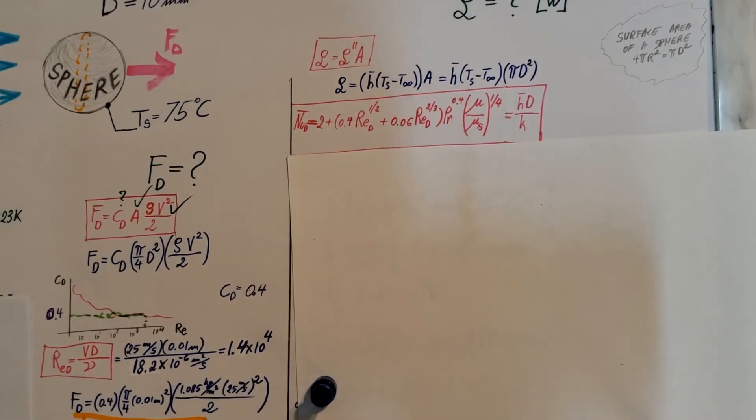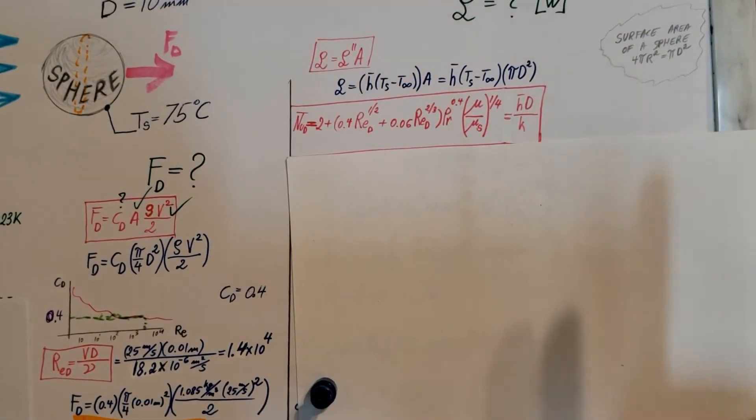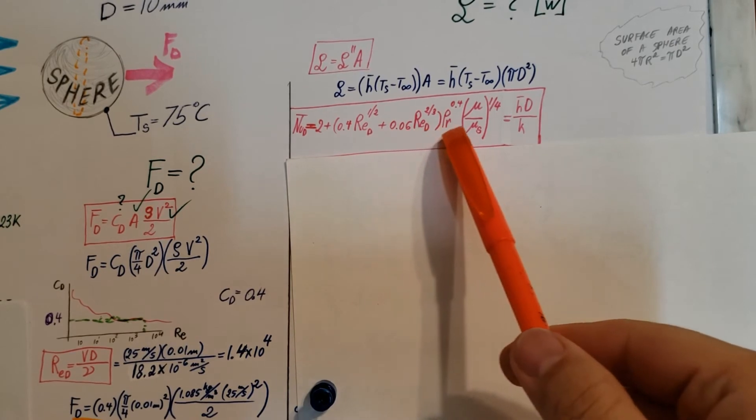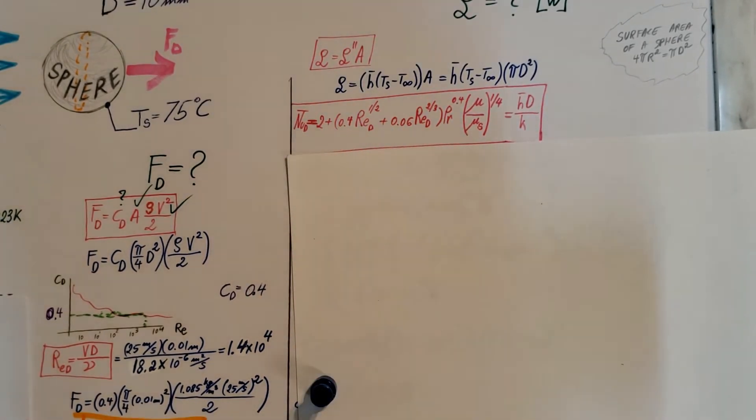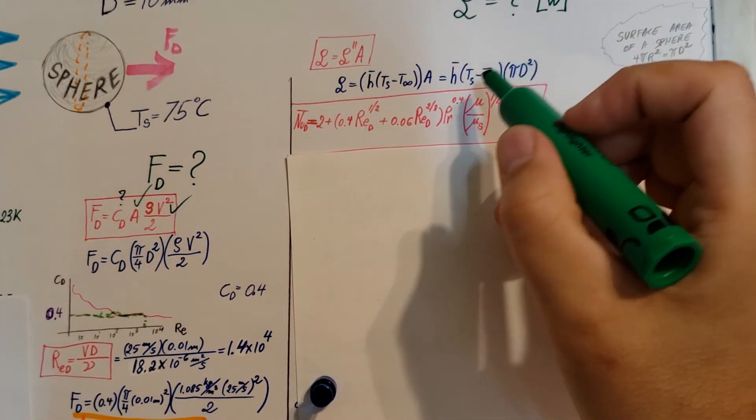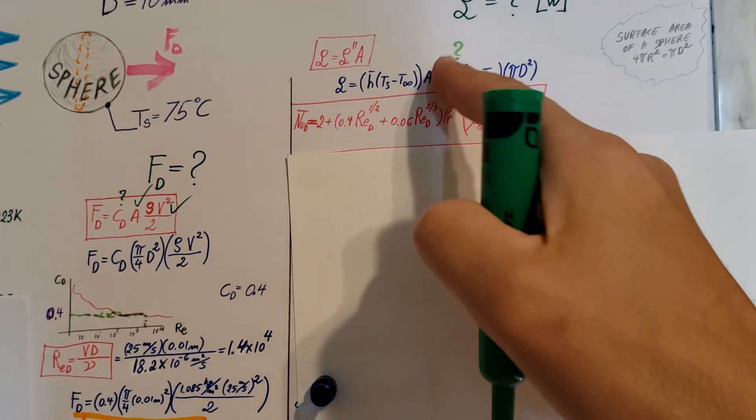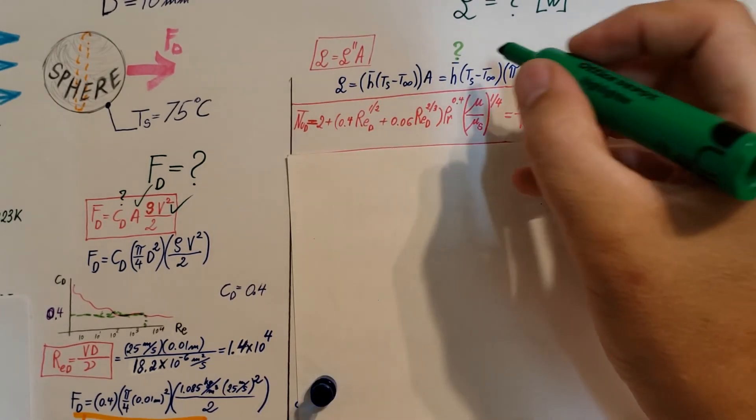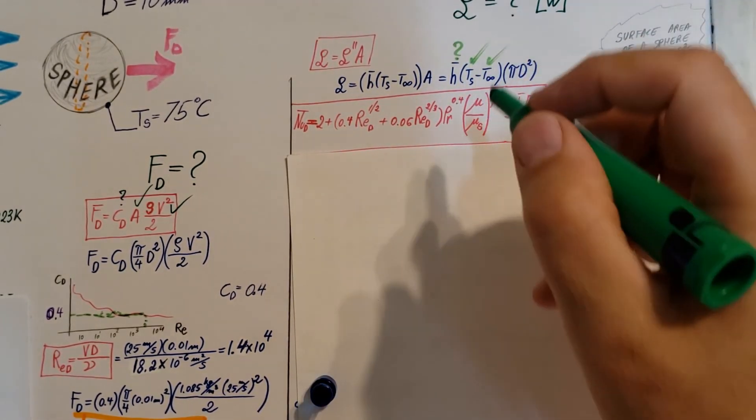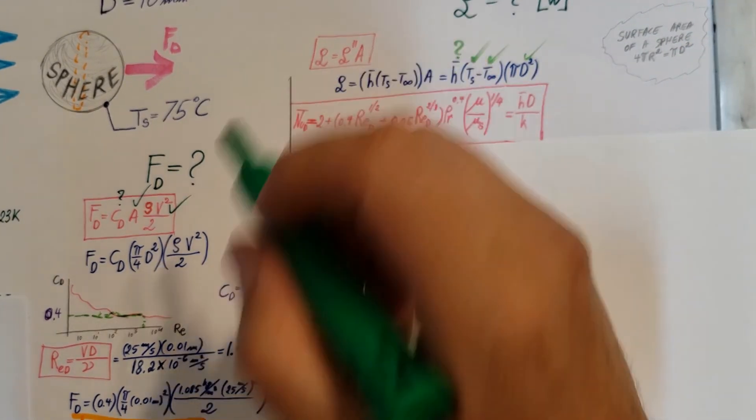Now here it is, this is the Whitaker formula, this is what we were looking forward to. And we have everything we need from it. Now in our previous setup up here we can see that the only unknown is actually our h, and this is where we're going to be able to find our h. Because TS we know, T infinity we know, pi we know, diameter we know, and we need to find this guy.